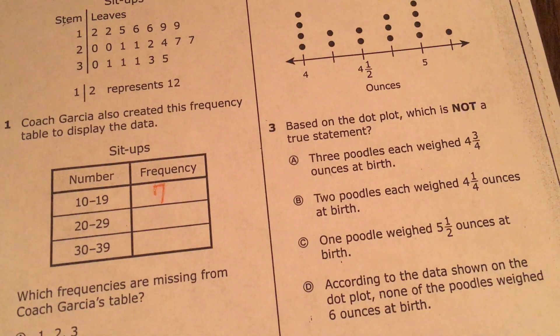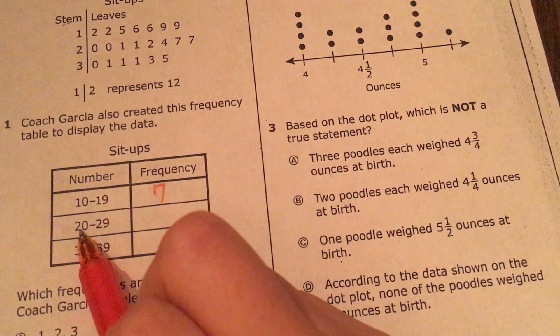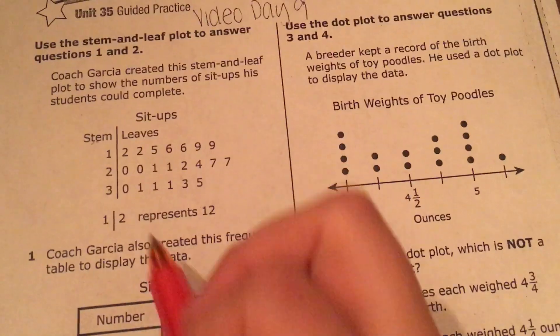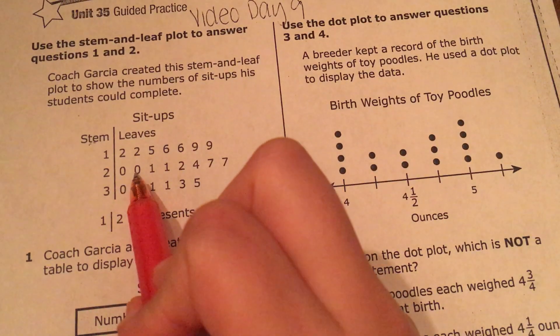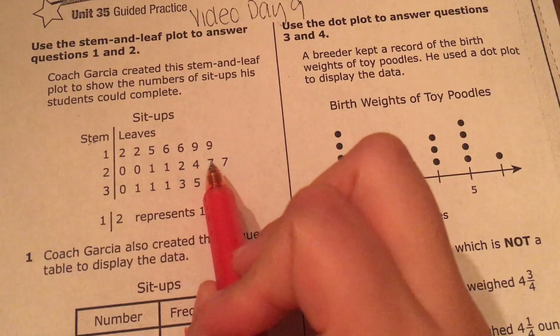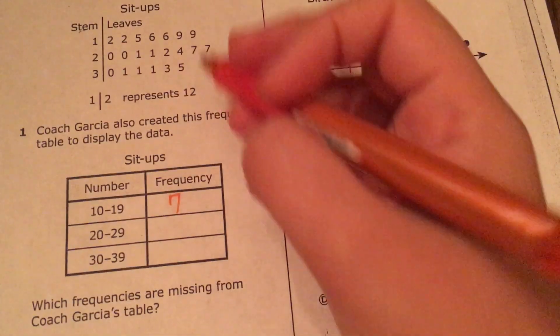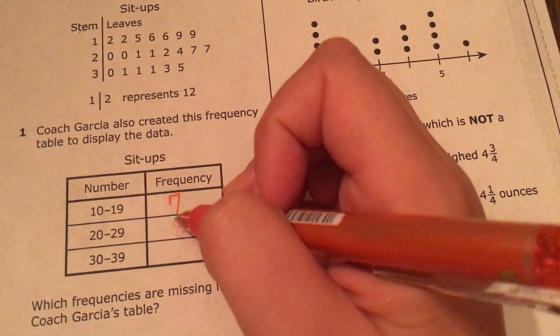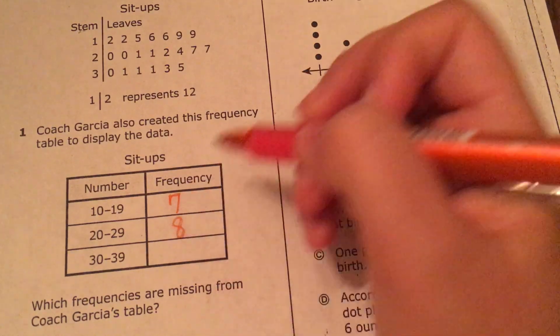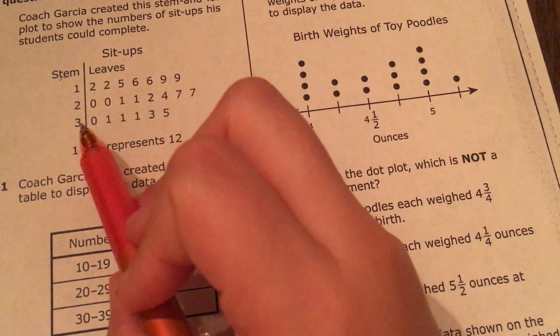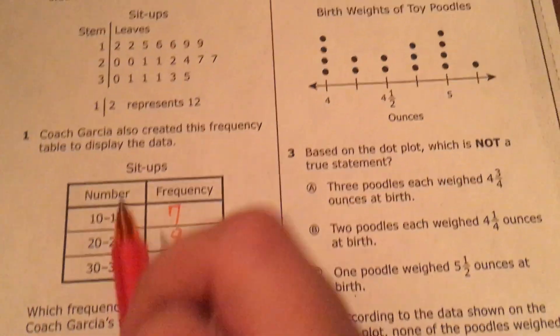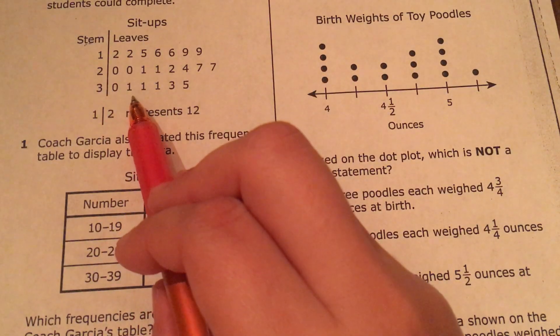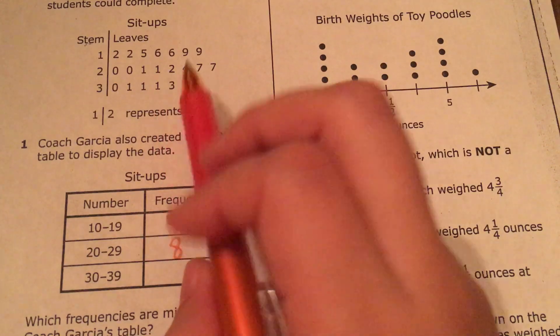Alright, and then how many numbers are between 20 and 29? 1, 2, 3, 4, 5, 6, 7, 8. I'm going to put 8 here. And then how many numbers are between 30 and 39? 1, 2, 3, 4, 5, 6.